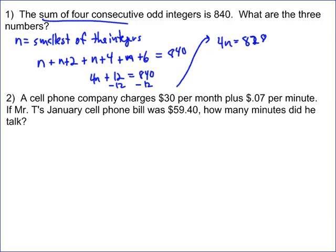If you divide 828 by 4, you're going to find out that n is equal to 207. So the four small numbers would be 207, 209, 211, and 213. Those are the four consecutive odd integers. If you added those up, they would equal 840.